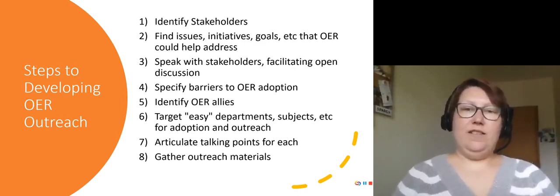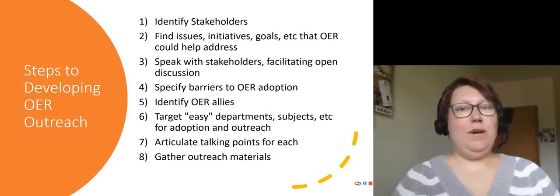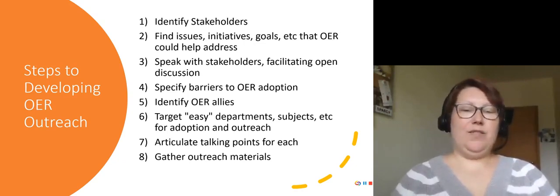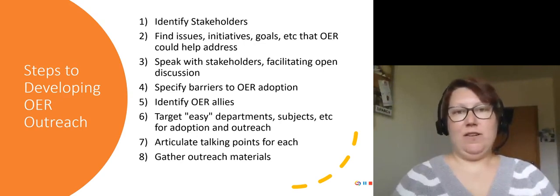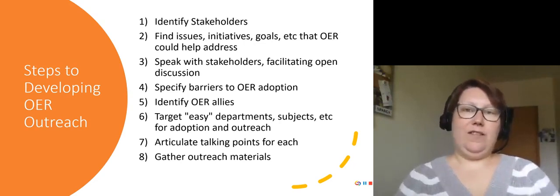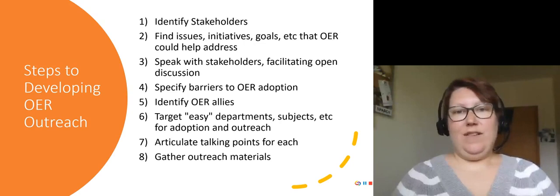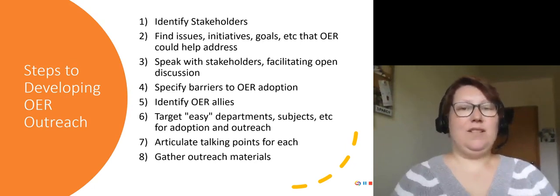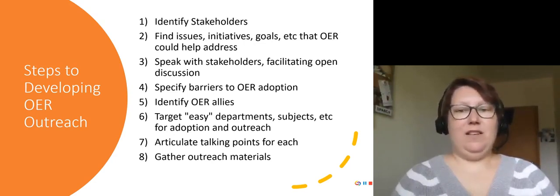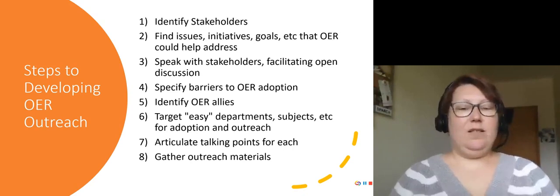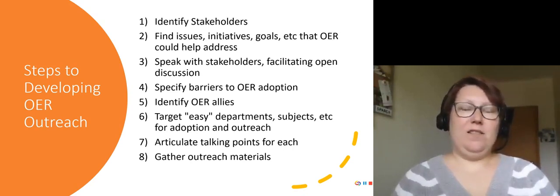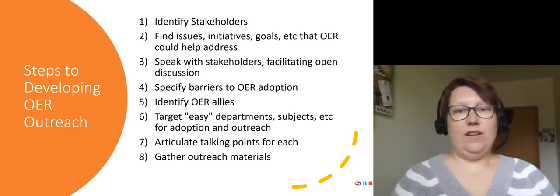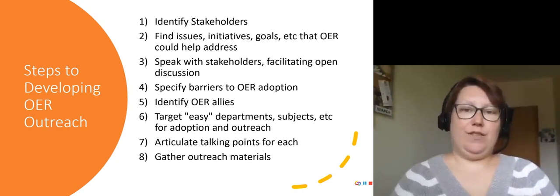Number five: identify OER allies. Who's going to be your champion in this? Who might be interested in being a pilot? Number six: target easy departments, subjects, etc. for adoption outreach. This could be areas such as math that have a lot of existing OER content, or departments that are already using some OER but could switch to all OER. Number seven: articulate talking points for each. What is going to be your key message for each of your stakeholder groups? How are you going to promote OER for them based on your research? And finally, number eight: gather your outreach materials. Now that you better understand what your stakeholders are going through, you can tailor your outreach materials specifically to them.